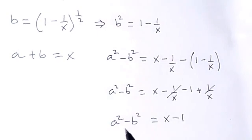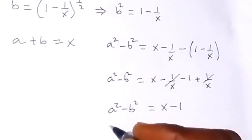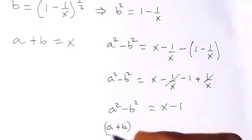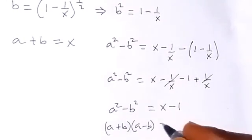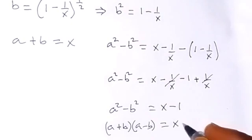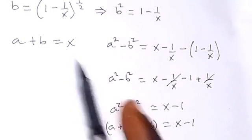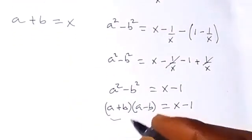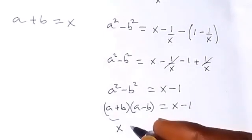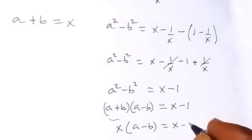From here we can write this again in the form of difference of two squares. So (A plus B)(A minus B) equals x minus 1. And we know that A plus B equals x, so we can substitute to get x times (A minus B) equals x minus 1.